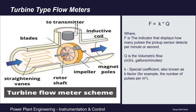The turbine flow meter equation describing the dependence between flow and pulse frequency is: f = k × Q, where f is the number of pulses the pickup sensor detects per unit time, Q is the volumetric flow in gallons or cubic meters per second, and k is the K factor — a spatial coefficient representing the number of pulses per cubic meter. The transmitter then analyzes the received data and converts them to analog and/or digital signals.